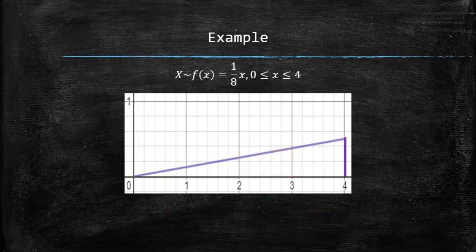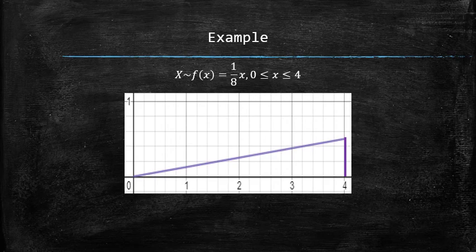It is worth noting that the probability of x being greater than 5 is 0 because the probability density curve has no area in that region. Also, the probability of x being greater than negative 2 is 1 because the probability density curve has its entire area in this region, which is by definition equal to 1.